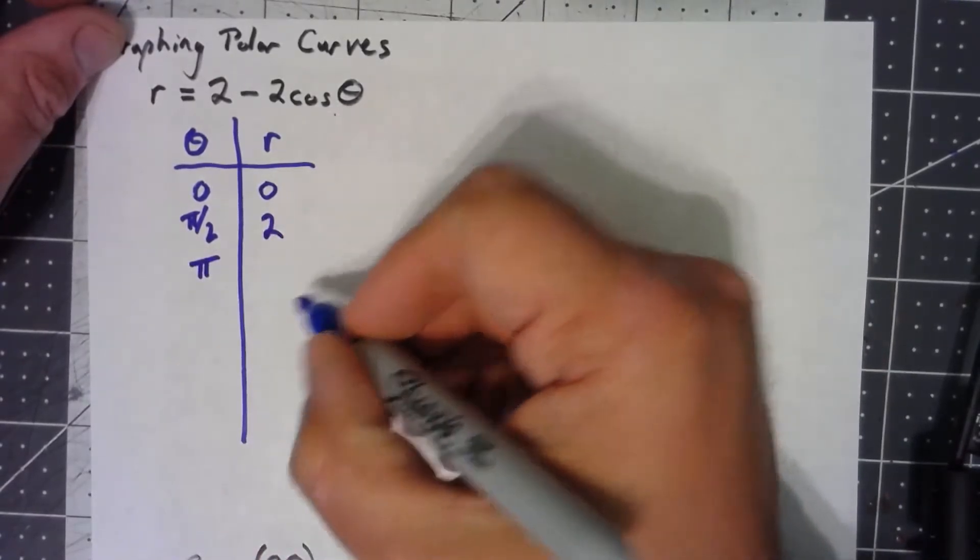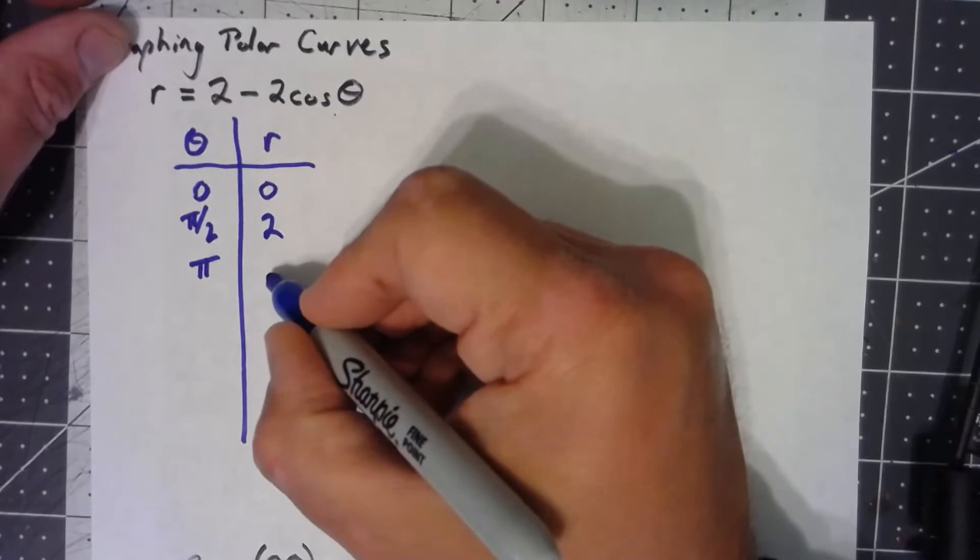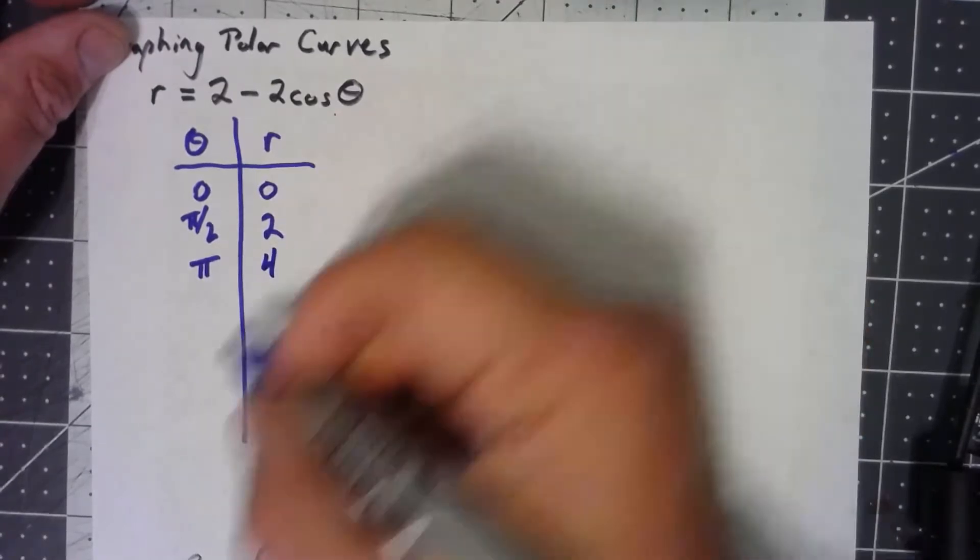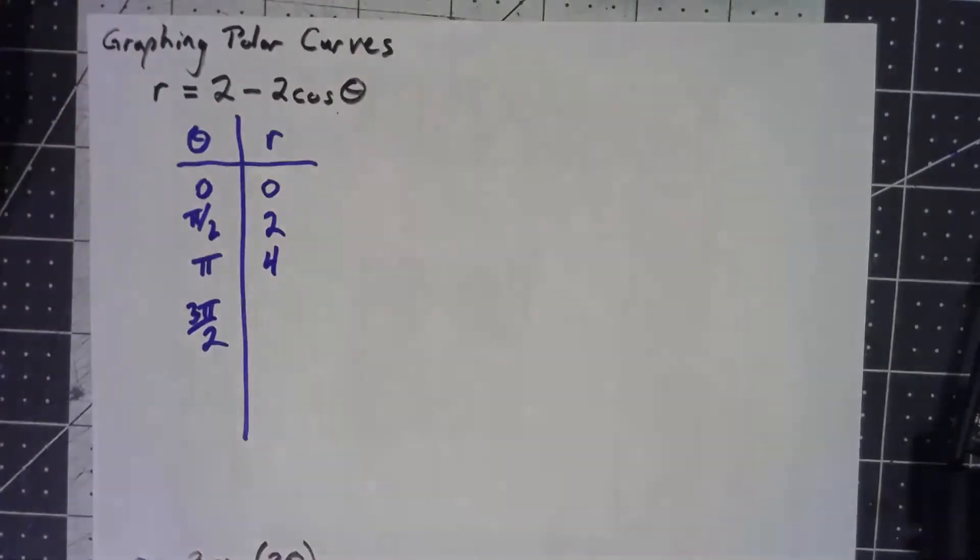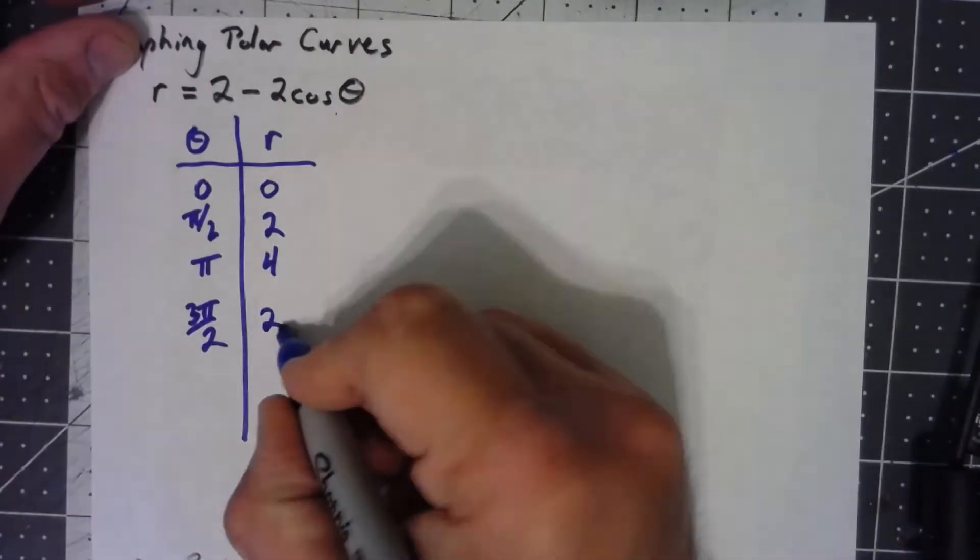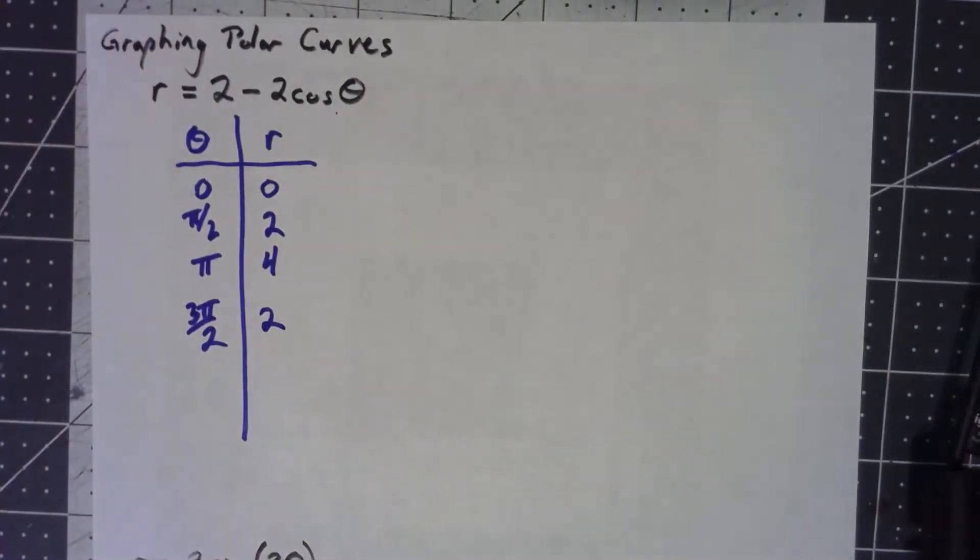At pi, cosine is negative 1, so we get a 4. And at 3 pi over 2, cosine is 0, so we're back down to a 2.